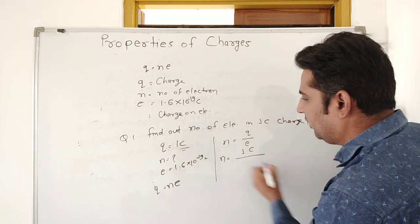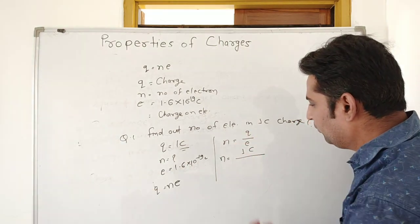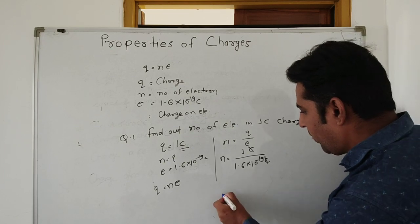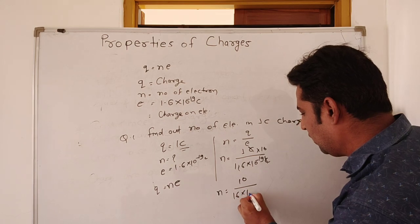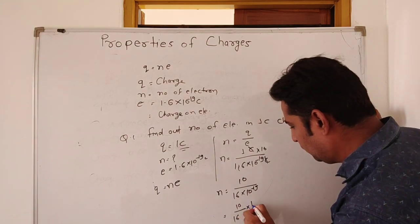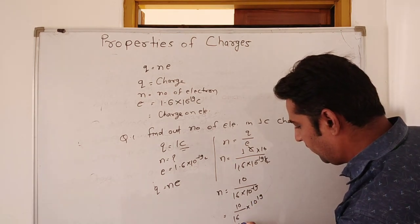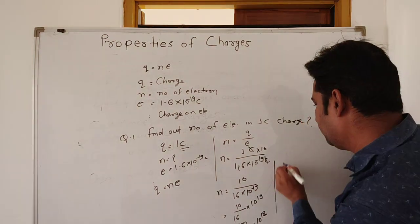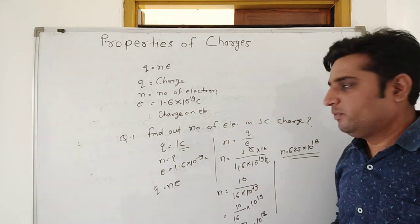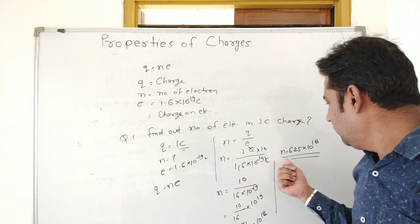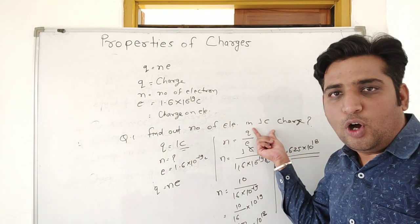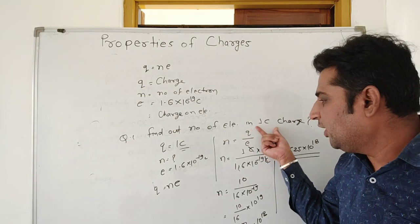Putting the values, N = 1 coulomb divided by 1.6 × 10⁻¹⁹ coulombs. After solving, we get N = 6.25 × 10¹⁸ electrons. So the number of electrons in 1 coulomb of charge is 6.25 × 10¹⁸. We can find the number of electrons for different values of charge — 1 coulomb, 2 coulombs, 3 coulombs — by putting different values of Q.